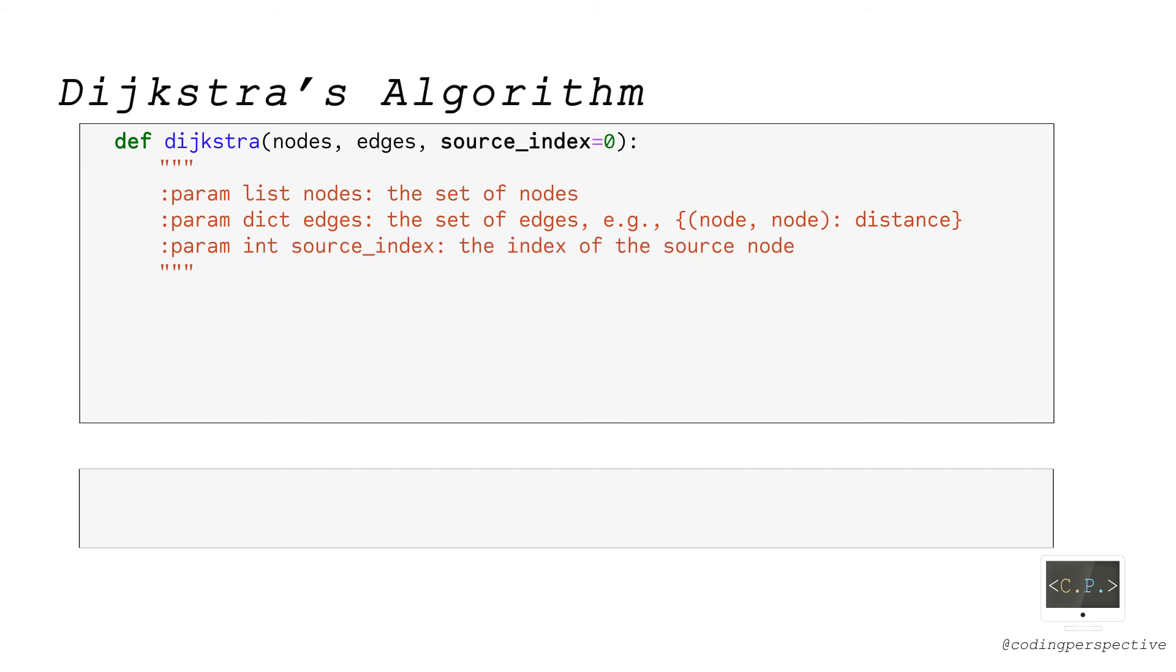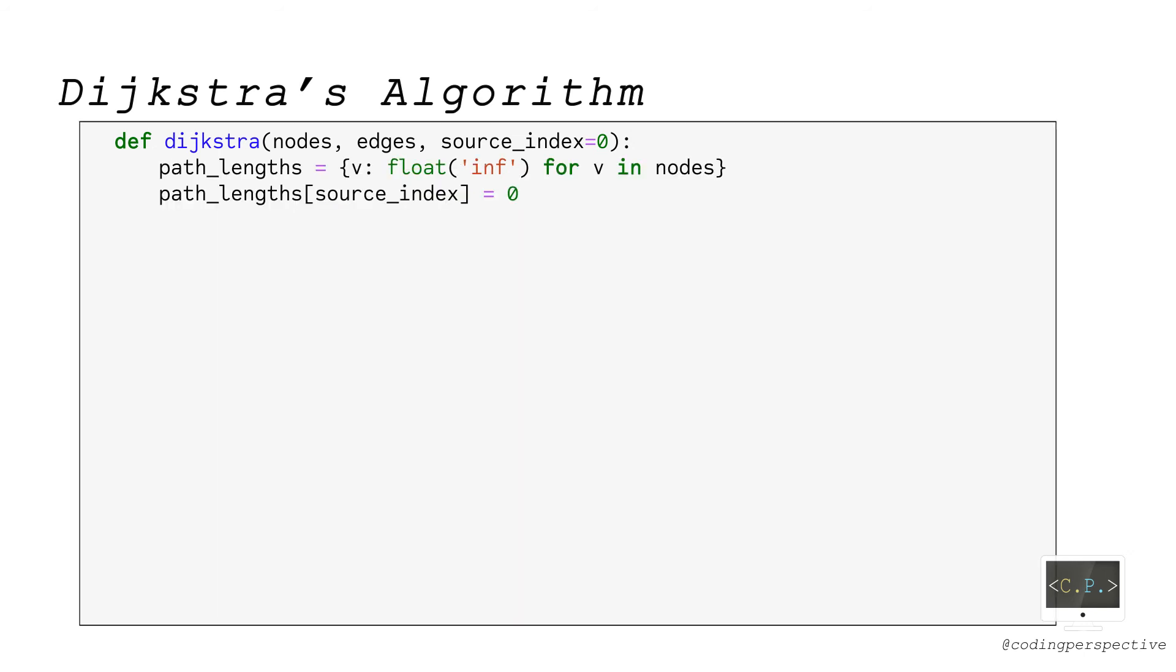For the last input, we defined source node by source_index_int with a default value of zero. As an output, Dijkstra function returns the shortest distance to each node from the source node. Let's now go over the algorithm.